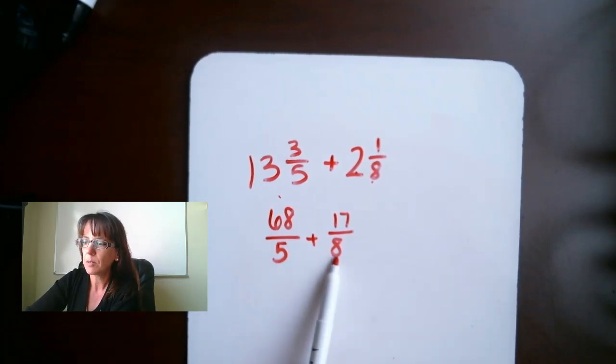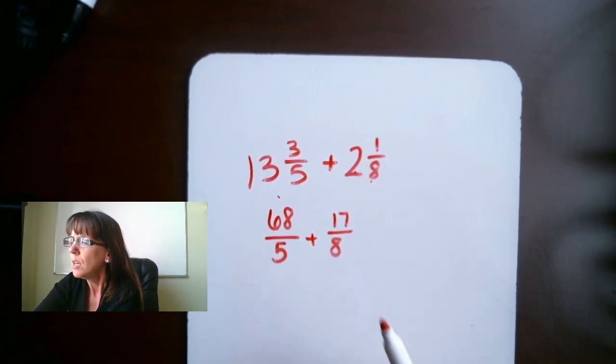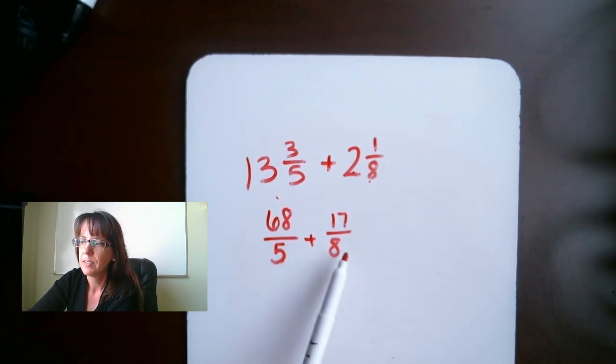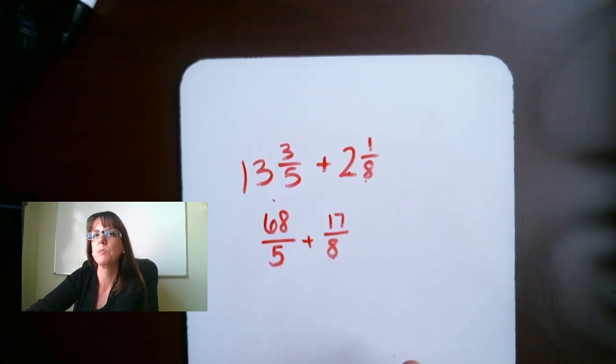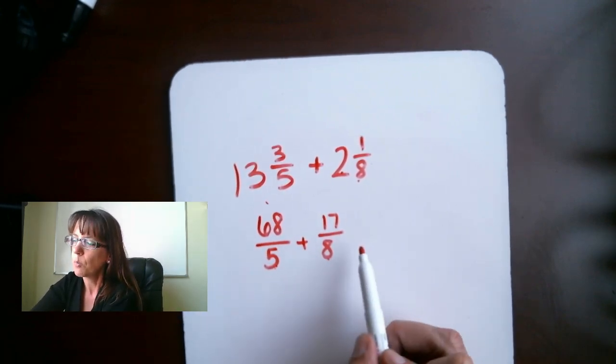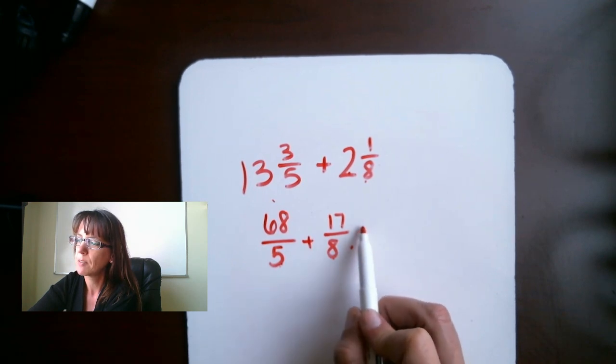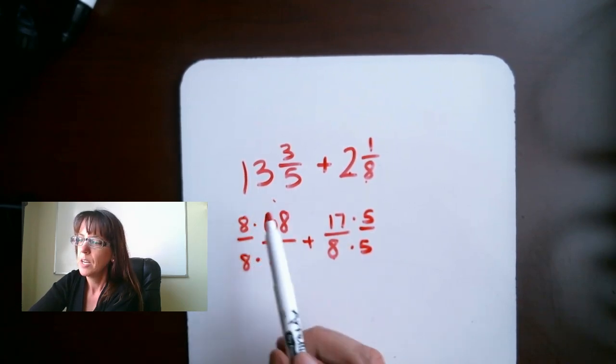To find that common denominator, we're going to multiply 5 times 8. Like I said in the beginning, most of the time you can just multiply the two denominators together, but sometimes it doesn't give you the least common one. In this case, it does. So, we're going to multiply it by something equaling 1, so we're going to multiply this by 5 over 5. This side, we are going to multiply it by 8 over 8.